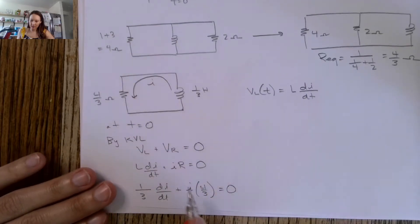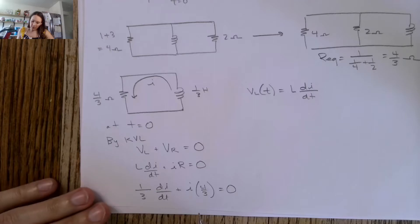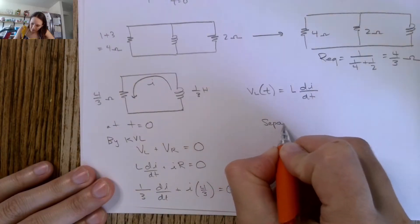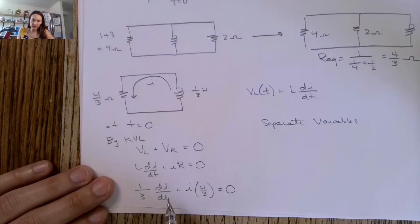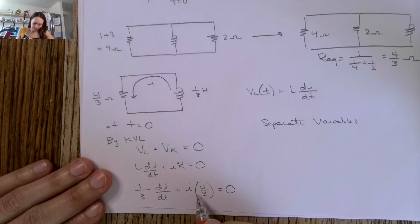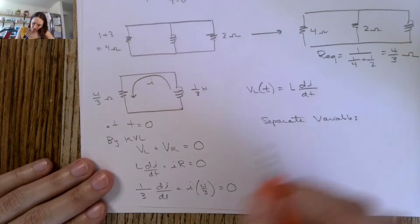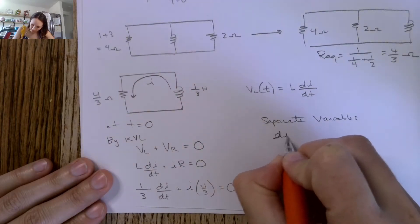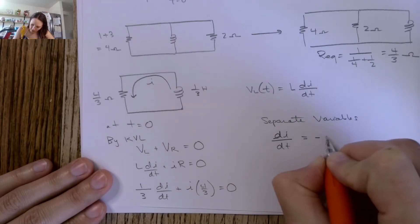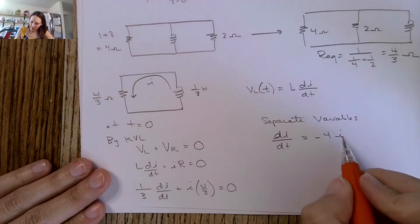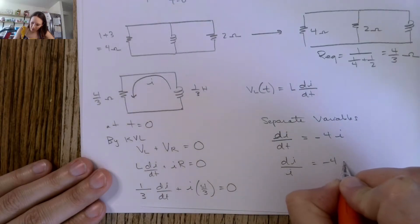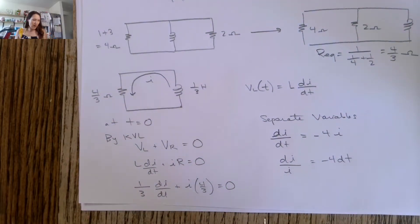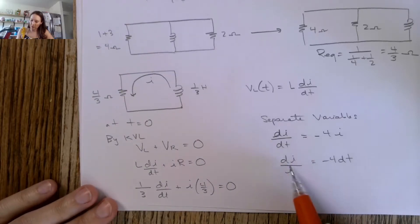You might recognize this as a first-order ordinary differential equation. To solve this, let's separate variables — all I terms on one side and all T terms on the other. Multiplying everything by three gives dI/dt equals negative four I. Bringing I down and dt over gives dI over I equals negative four dt.